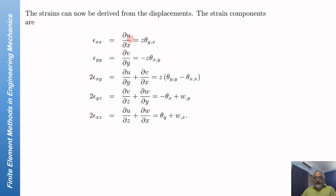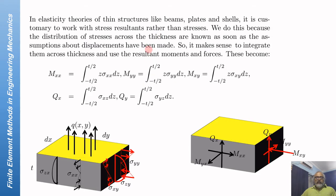Note that the strains epsilon XX, epsilon YY, and epsilon XY vary linearly with the Z coordinate. Because of this, the stresses are also expected to vary linearly with Z. In elasticity theories of structural elements like beams and plates, it is customary to work with stress resultants, which are the combined effect of integrating the stresses across the small thickness of the plate or beam.